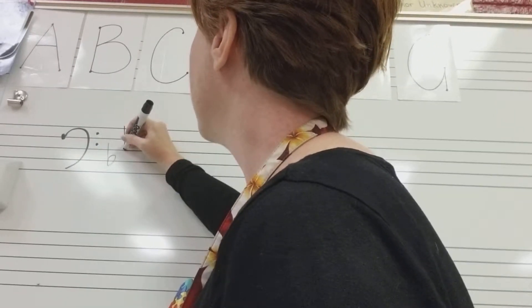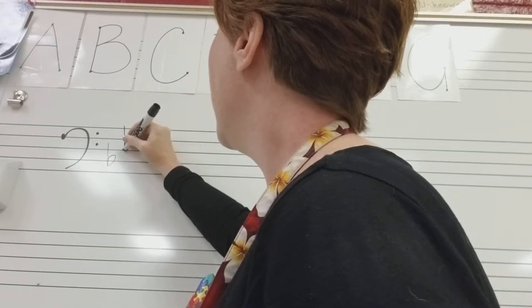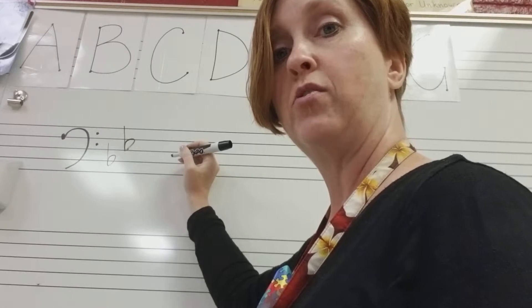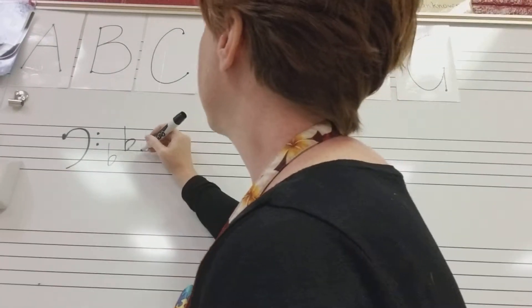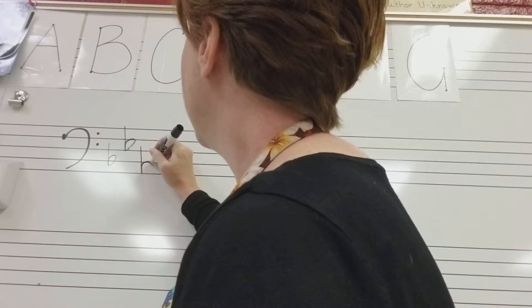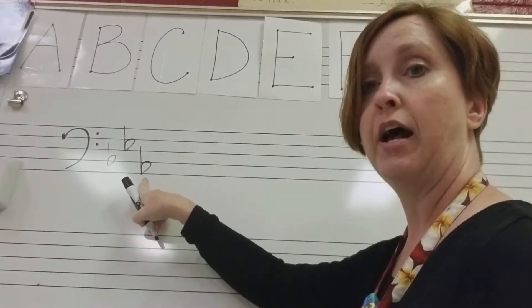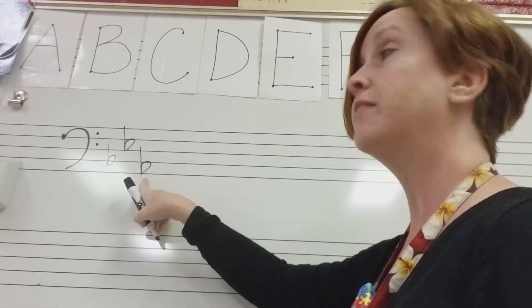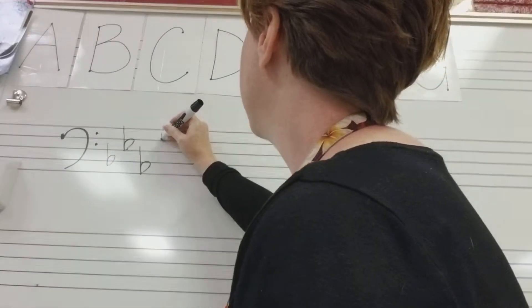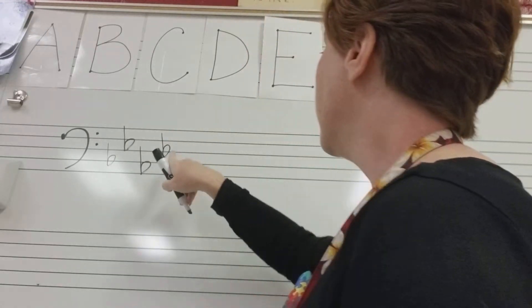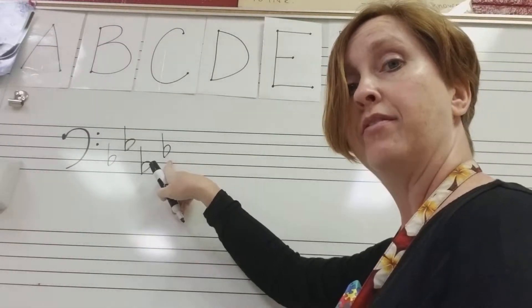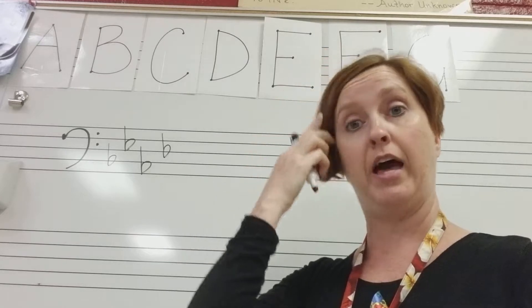Then we're going to stagger and draw the second one on the third space, that's for your E-flats. Then we're going to stagger and draw our third one on the first space for A-flat. And then finally, we're going to draw our fourth one on the third line, and that's for your D-flat.